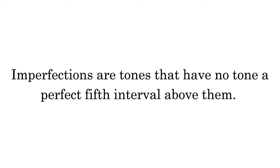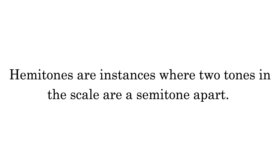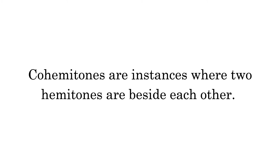Imperfections are tones that have no tone a perfect fifth interval above them. This scale has three imperfections. They are at positions here, here, and here. Hemitones are instances where two tones in the scale are a semitone apart. This scale has three hemitones. They are at positions here, here, and here. Co-hemitones are instances where two hemitones are beside each other. This scale has one co-hemitone.